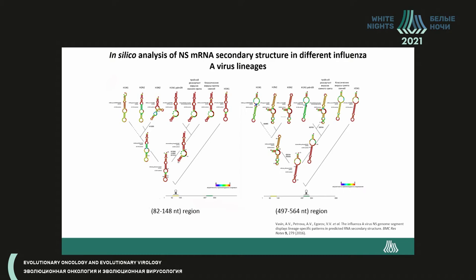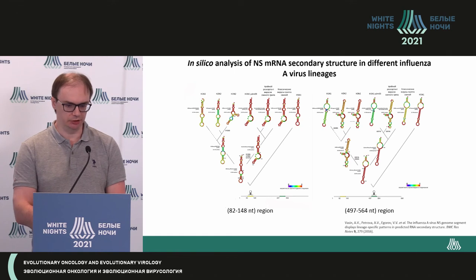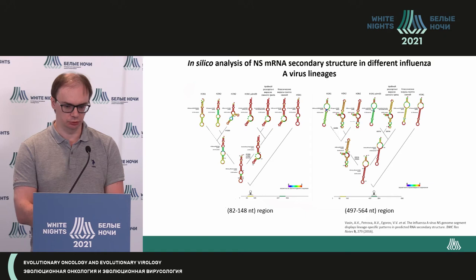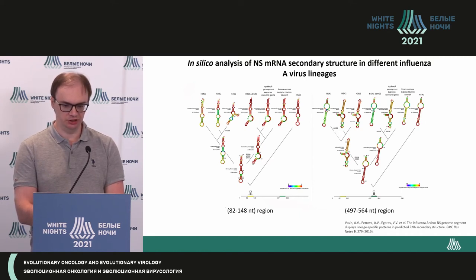First, we did in silico analysis and tried to understand if those structures are conserved in human viruses and if those structures change with time. This slide shows some phylogenetic schematics for each of the sections. You can see changes of the secondary structure in segment one, located in the region 82–148 nucleotides, and the second in region 497–564. This phylogenetic tree was built dating from 1918, from when the Spanish flu virus was first identified. These structures have so-called stem loop structures, and we analyzed all sequences in databases to see if the structure is retained during evolution.